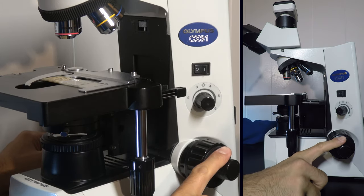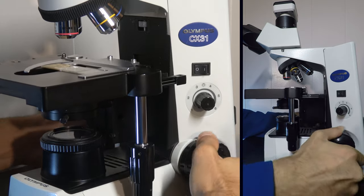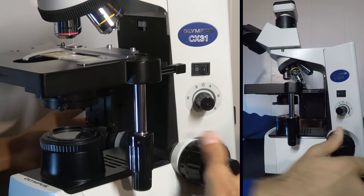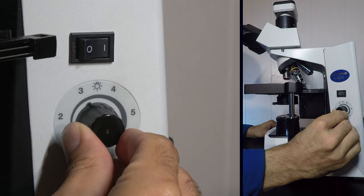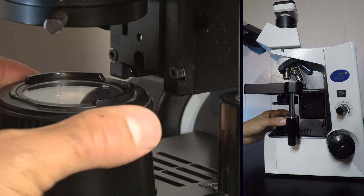Here is the fine focus knob but we will use the coarse focus first. Use both hands to slowly bring the stage to the top. Turn on the light and increase the intensity halfway to max. If adjustable, fully open the illuminator.